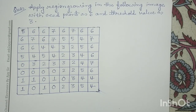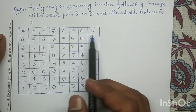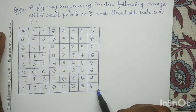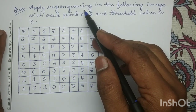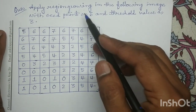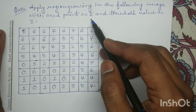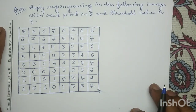Based on region growing we will solve a numerical question. In this given question, a digital image is given to us and for this given digital image we will apply region growing. The seed value given to us is 6 and the threshold value given to us is 3.